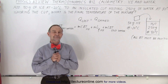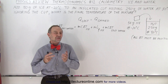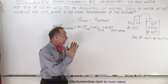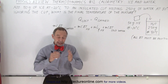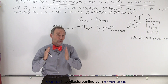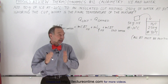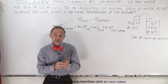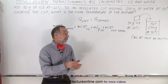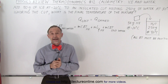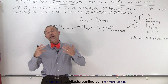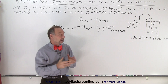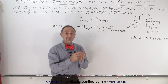Welcome to Electrum Online. Now let's review a calorimeter problem where we take a cup of warm water at 80 degrees Celsius and we add a clump of ice — 50 grams of ice — at minus 20 degrees Celsius, and we're being asked to find the final temperature of the mixture.